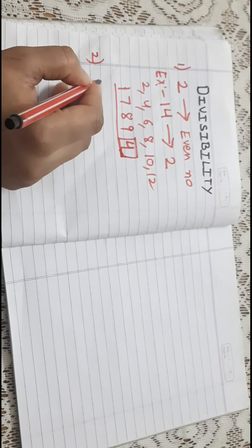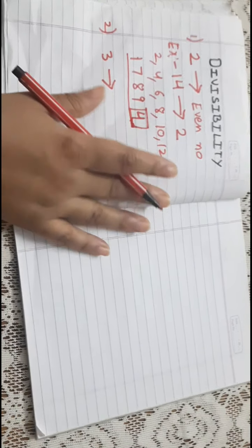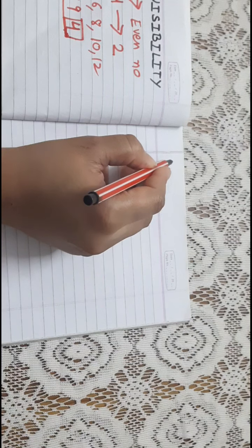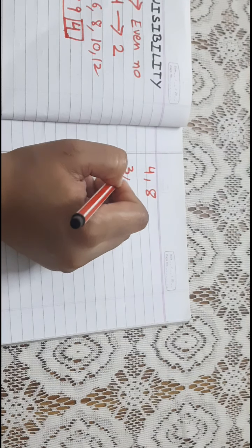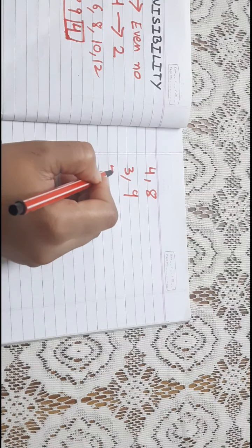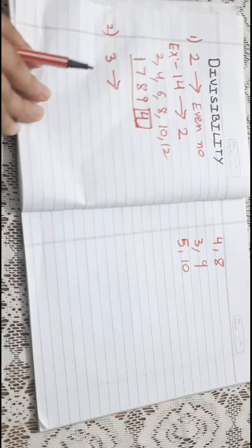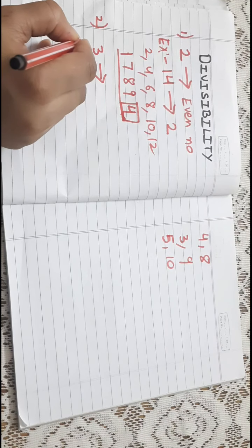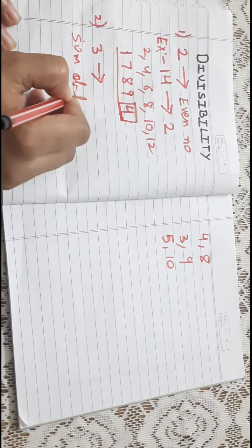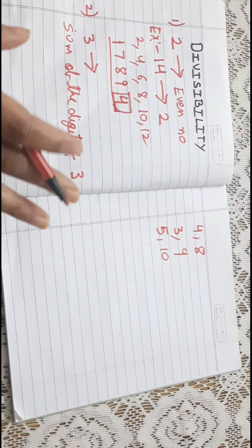Now comes the second number, that is number three. Iske pehle main ek cheez aur bata dun ki divisibility mein kuch numbers mein similarities hain — jaise four and eight ki divisibility similar hai, aur next three and nine, aur five and ten — in numbers ki divisibility similar hai. Pehle hum three ko check kar lete hain. The sum of the digits of a given number — if it is divisible by three, then the whole number will be divisible by three.